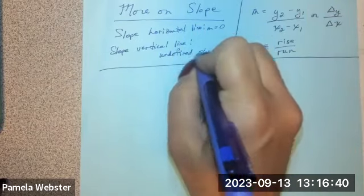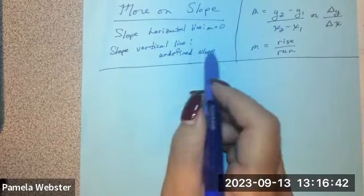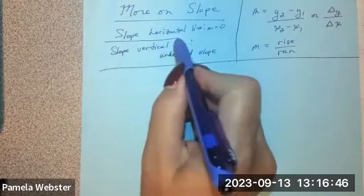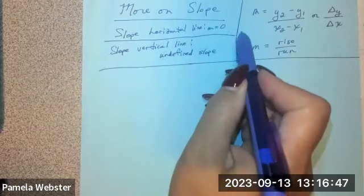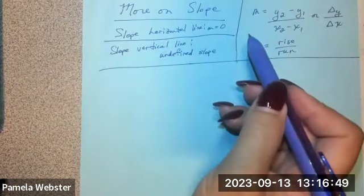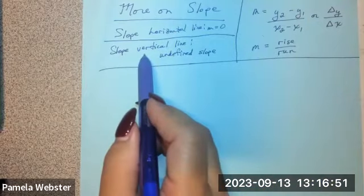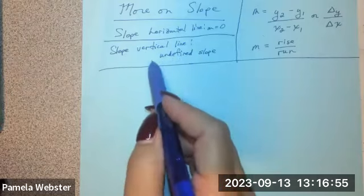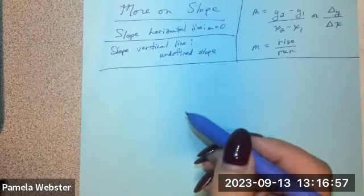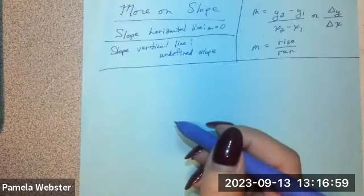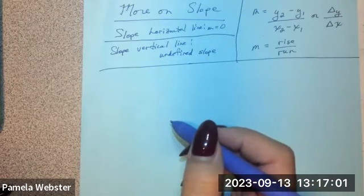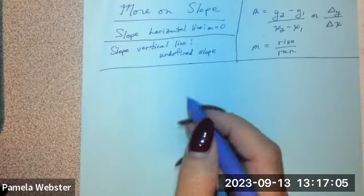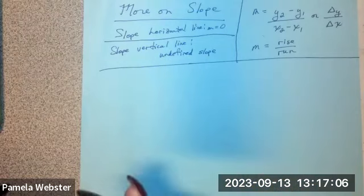We can't drive our Jeep up the side straight up the cliff. We can go on a horizontal line, we can go flat forever. So our slope is zero, we're not going up, we're not going down, but we cannot drive our vehicle straight up the side of the vertical cliff, so it's undefined slope.